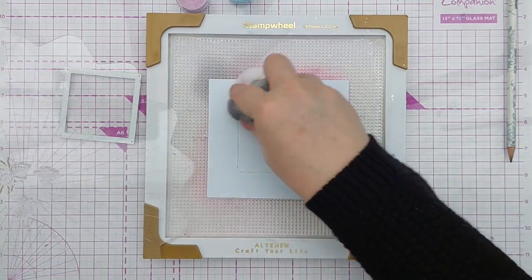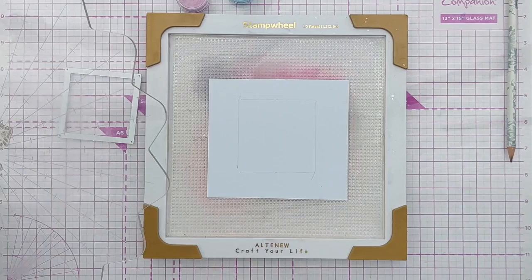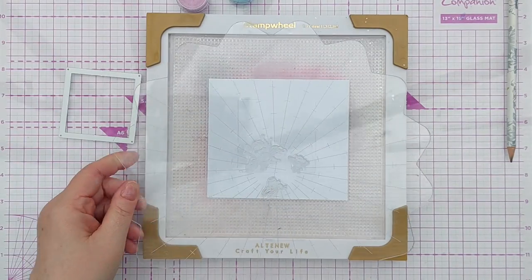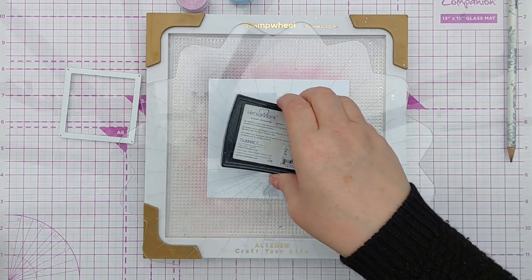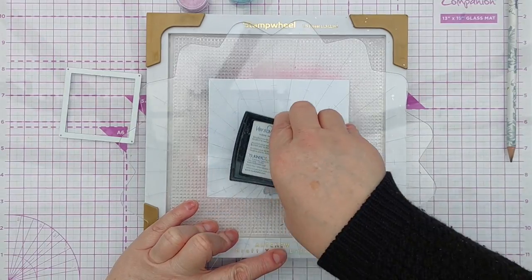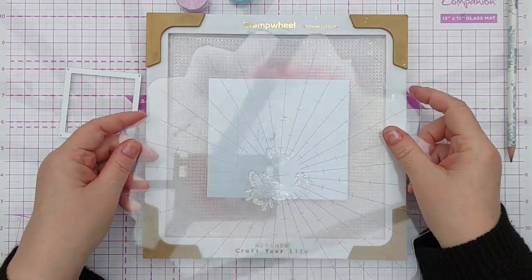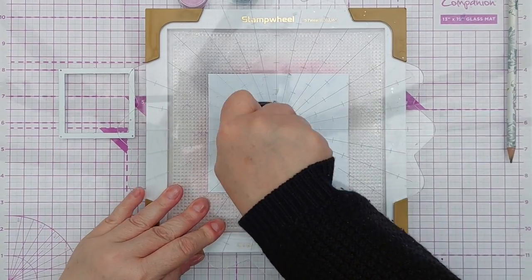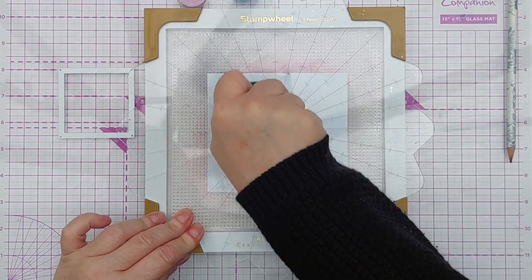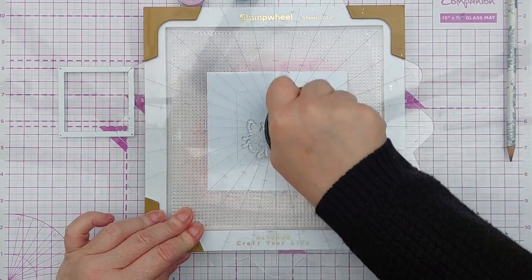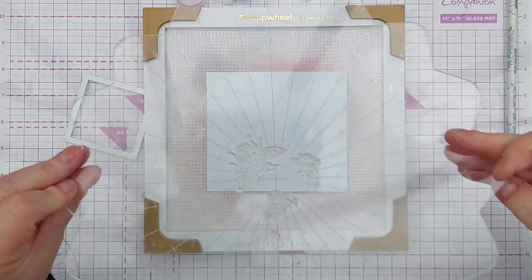Now I can pick those up and treat that with my anti-static powder tool and ink these with embossing ink, press them down. I think I'll do that twice just to make sure I get a good impression.